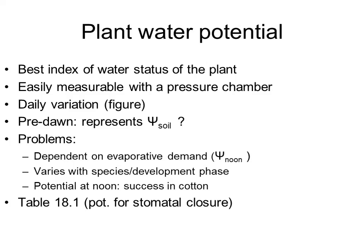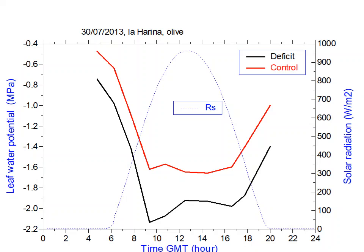In some cases, the use of water potential has been successful, like in cotton using midday leaf water potential. Here you have the typical time course of leaf water potential during the day for a control irrigated tree — this is olives in La Rambla, a farm close to Córdoba, 2013. The maximum potential occurs just before sunrise, then decreases during the day, and we have a plateau during the midday central hours, then a recovery of potential in the late afternoon.